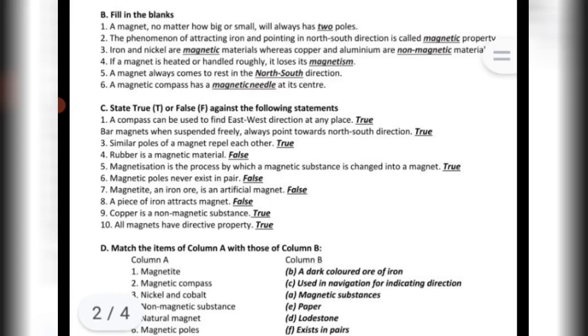Non-magnetic substance: paper. Natural magnet: loadstone. Magnetic poles exist in pairs: Yes.